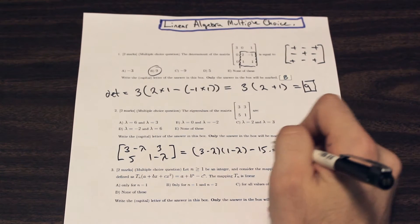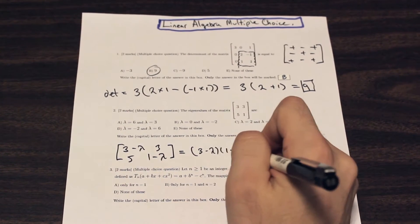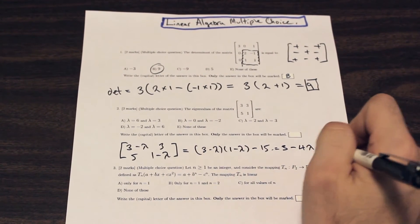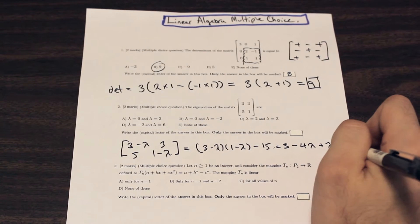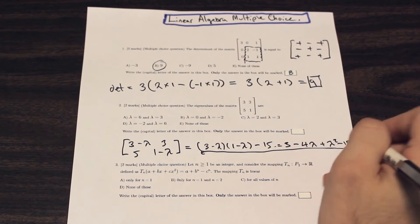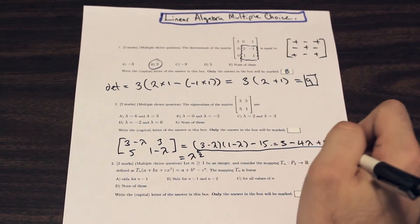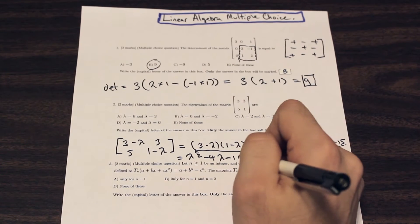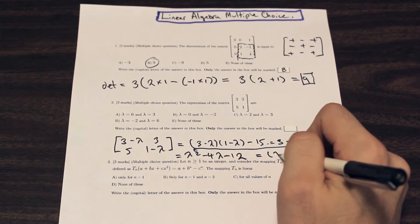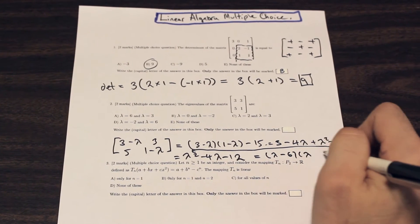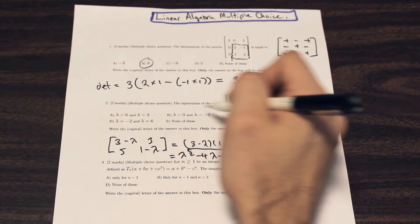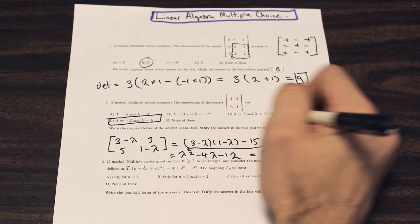Expanding this: three times one, then three times negative lambda gives negative three lambda, minus lambda — so that's four lambda total — plus lambda squared, minus fifteen. Cleaning that up gives lambda squared minus four lambda minus twelve. Factoring that is straightforward: that equals lambda minus six times lambda plus two. So our eigenvalues are lambda equals six and negative two. We can see that in the answer choices — that is D.